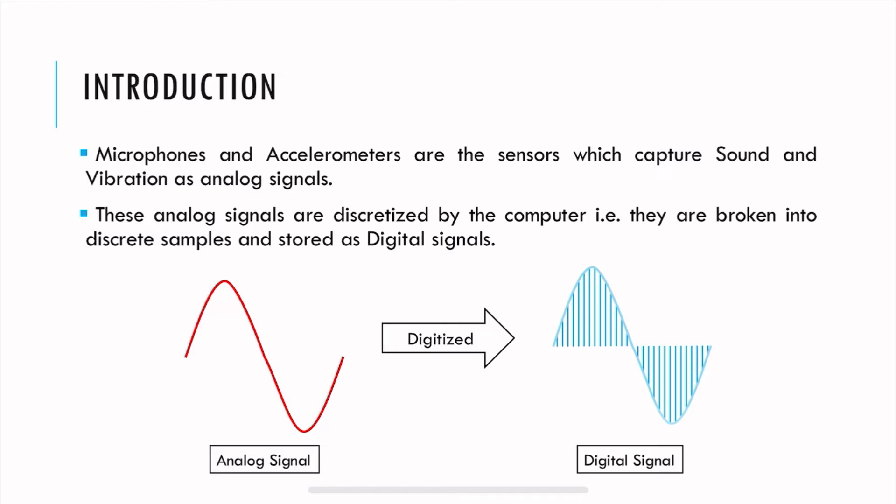Microphones and accelerometers are the sensors which capture sound and vibration as analog signals. These analog signals are discretized or broken down by the computer into small samples called digital signals. On the left you see an analog signal — an analog signal is made up of infinite points. But the digitization process breaks the signal into a finite number of points, and the end result is a digital signal.